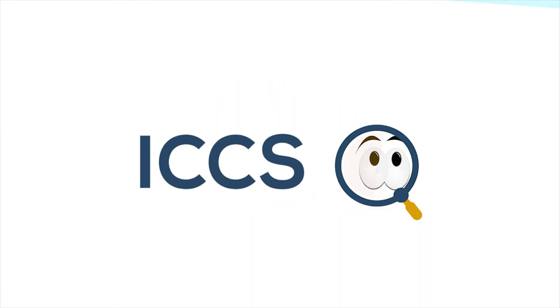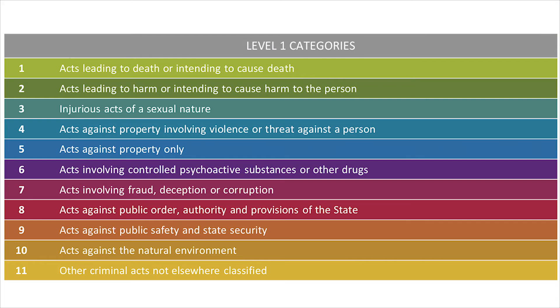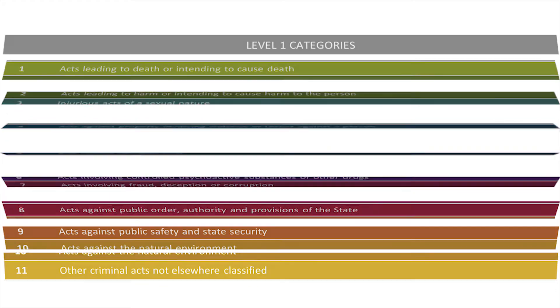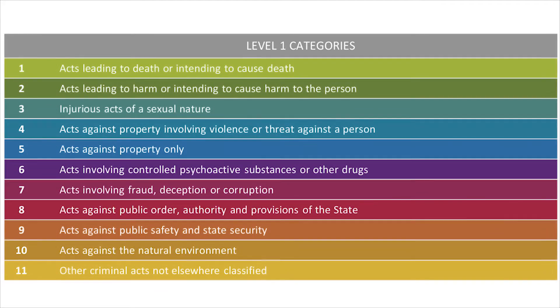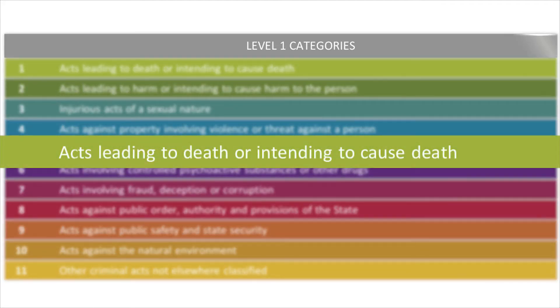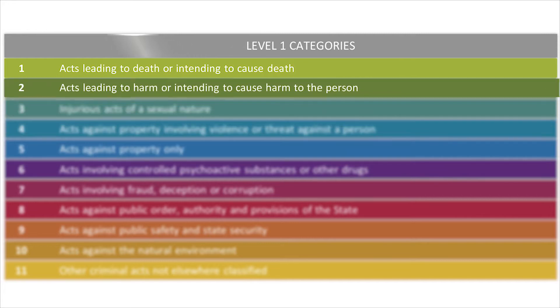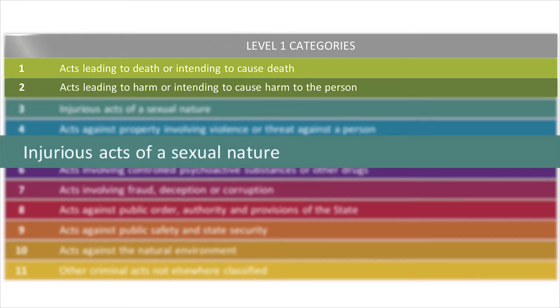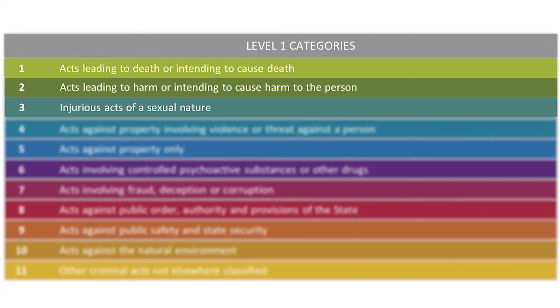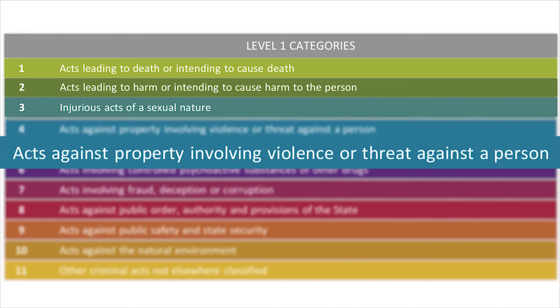Let's take a closer look at the ICCS. The ICCS groups offenses into eleven level one categories. One, acts leading to death or intending to cause death. Two, acts leading to harm or intending to cause harm to the person. Three, injurious acts of a sexual nature. Four, acts against property involving violence or threat against a person. Five, acts against property only.